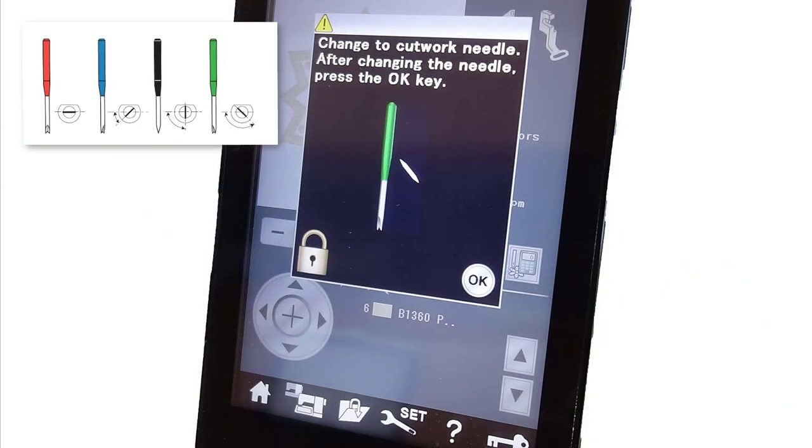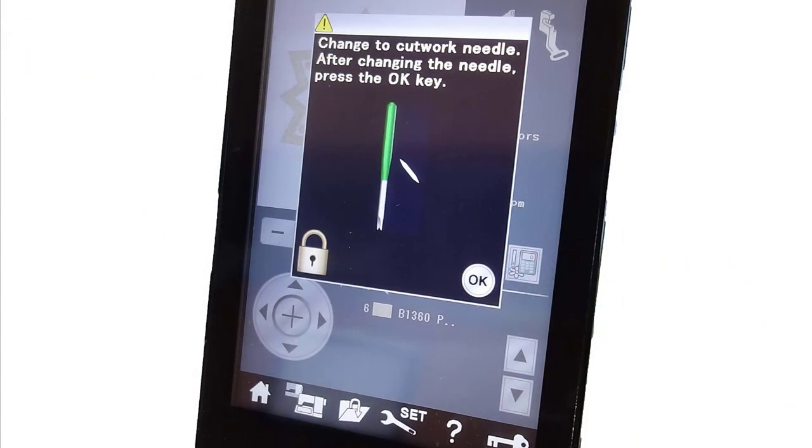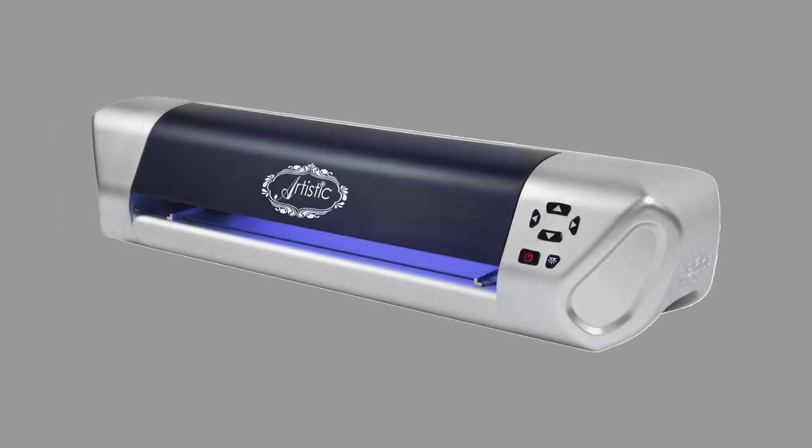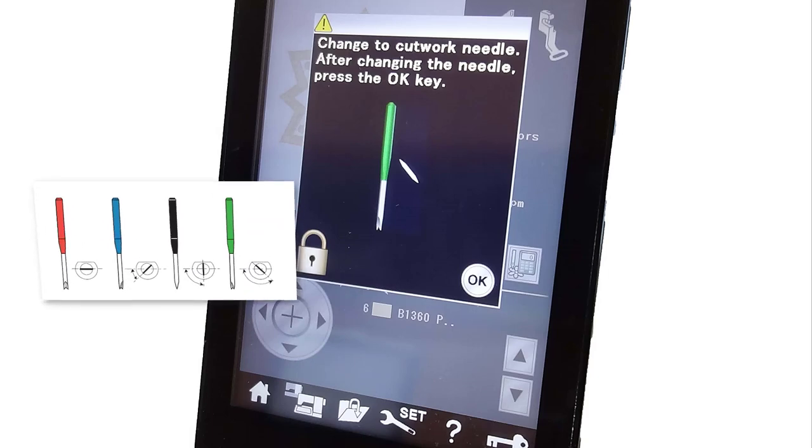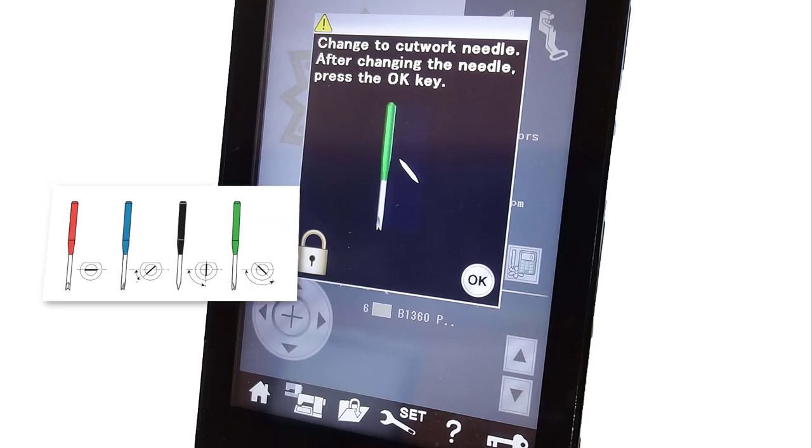A nice alternative is to have the fabric cut using special needles on your embroidery machine or by using a digital cutter. For this video, we will show you how to cut the fabric using the special cutting needles on your embroidery machine.